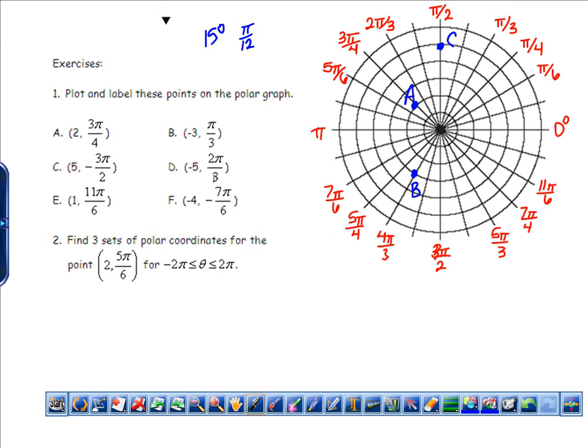Okay, D says (-5, 2π/3). So again, I'm going to locate 2π/3, right here. And I'm going to go to the opposite one, which is going to be 5π/3. 1, 2, 3, 4, 5. Now, how do you think you could find this angle without having this nice, pretty picture in front of you?